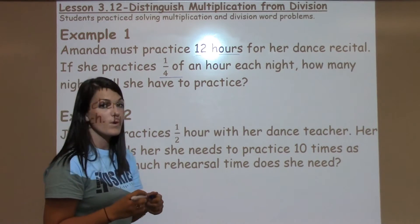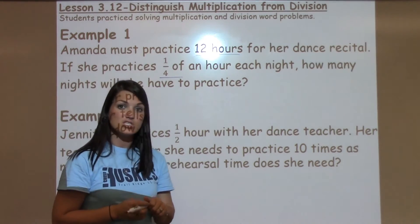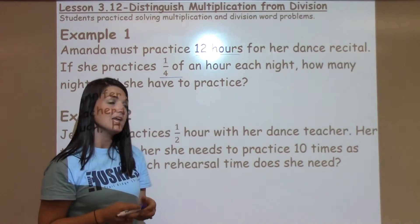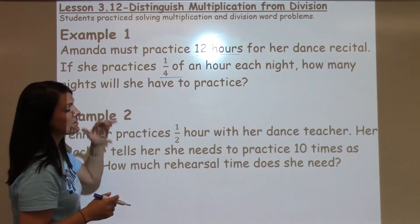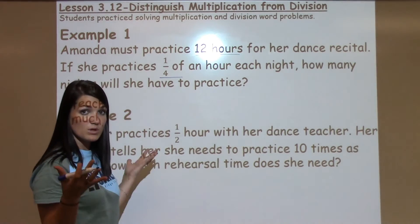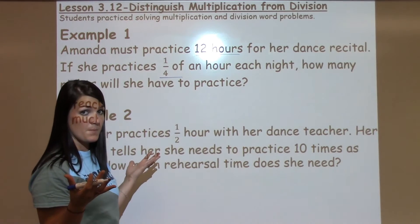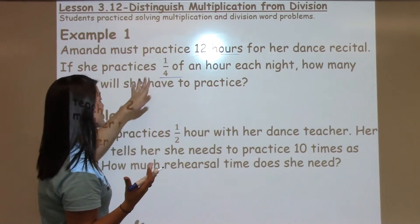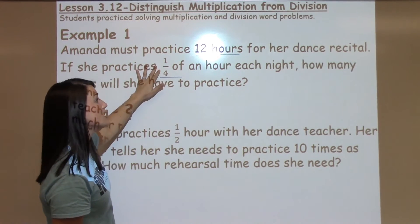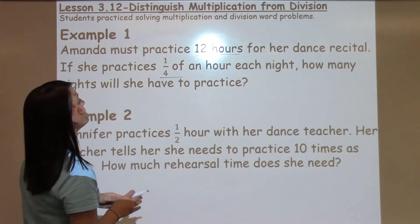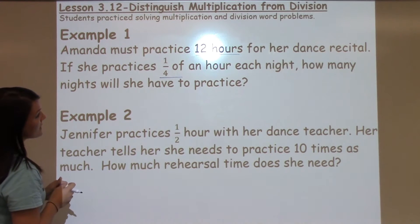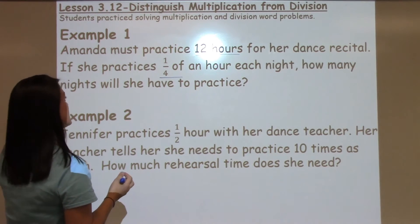Remember, with our generalizations that we learned about in 3.9: when I normally would multiply whole numbers, my answer would get bigger. But because I have a fraction, my answer is going to get smaller. So in order to make my answer bigger, I need to divide these numbers.